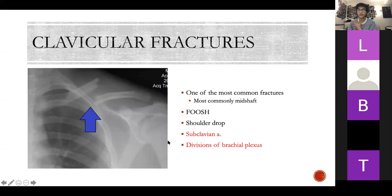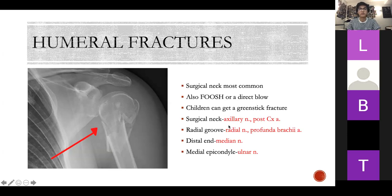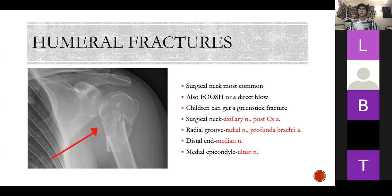For humeral fractures: at the surgical neck, worry about your axillary nerve and posterior circumflex artery. At the radial groove: your radial nerve and profunda brachii artery. At the distal end: worry about your median nerve — that's a supracondylar fracture. At the medial epicondyle: worry about your ulnar nerve. This is quite important — if a patient has a humeral fracture but you're not told which type, you need to be able to work out the location from the clinical presentation.